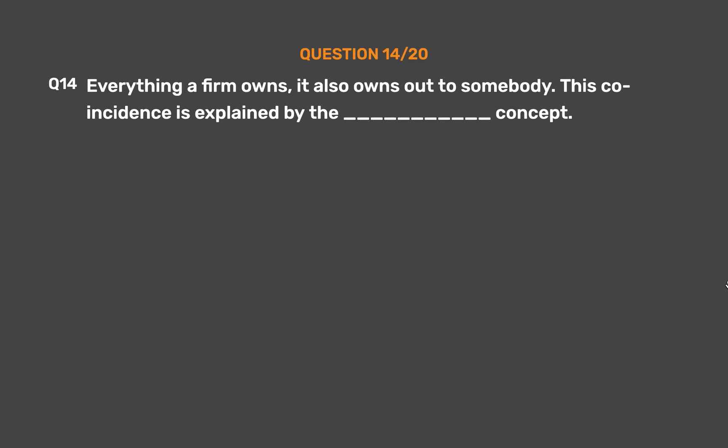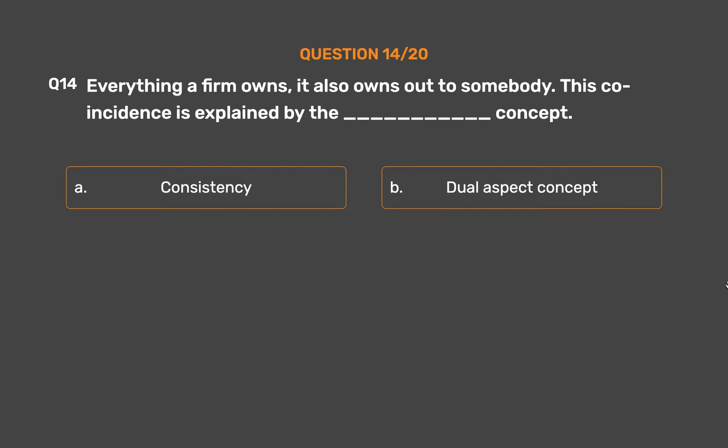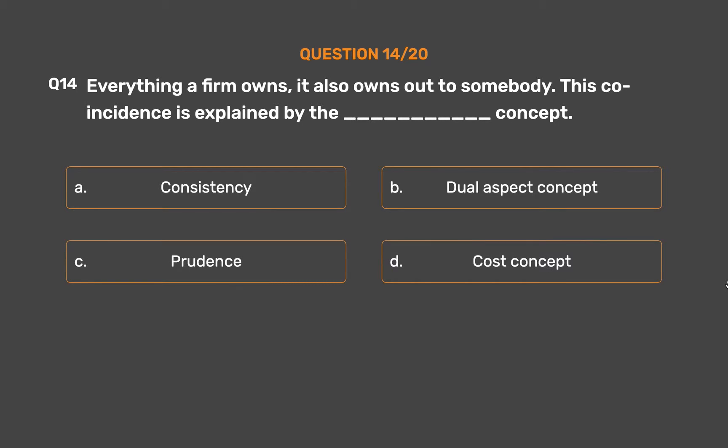Question No. 14: Everything a firm owns, it also owes out to somebody. This coincidence is explained by which concept? Option A: Consistency. Option B: Dual Aspect Concept. Option C: Prudence. Option D: Cost Concept.